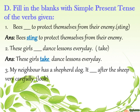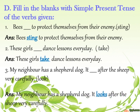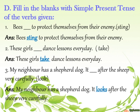Number three: My neighbor has a shepherd dog. It ___ after the sheep very carefully (bracket: look). It is a singular subject, so look becomes looks. My neighbor has a shepherd dog. It looks after the sheep very carefully.